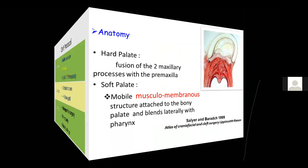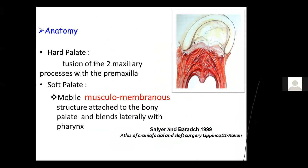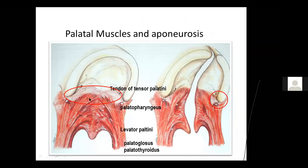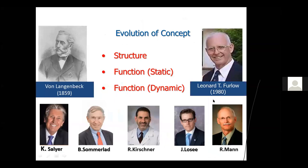If we look at the anatomy of the cleft palate, it's formed by two parts: the hard palate, which is the fusion of the two maxillary processes with the pre-maxilla, and the soft palate, which is formed of a musculomembranous structure attached to the bony palate. The muscles are inserted into the hard palate through the fascia of the tensor palatine, and in the cleft, this fascia or tendon is reduced to a minute part.